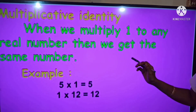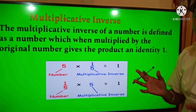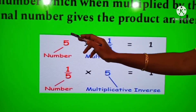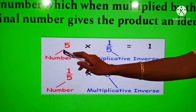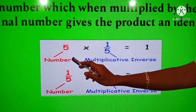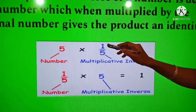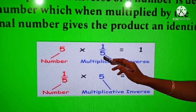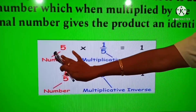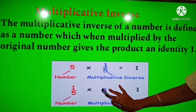Now the next one is multiplicative inverse. Multiplicative inverse means when we multiply two numbers we get the product as 1. For example, 5 into the reciprocal of 5 — we can write 5 as 5 by 1, and its reciprocal or multiplicative inverse is 1 by 5. The denominator comes to the numerator and the numerator comes to the denominator. So 5 multiplied by 1 by 5 gives 1. The multiplicative inverse of 5 is 1 by 5, and the multiplicative inverse of 1 by 5 is 5.